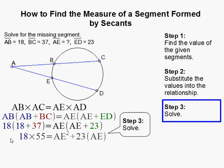What I first did was 18 plus 37 is 55. And this one is a little different, this one's tricky. What I did was I distributed AE to both, so that gives me AE squared plus 23 times AE.